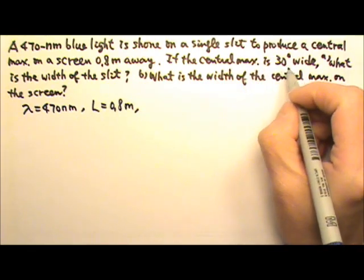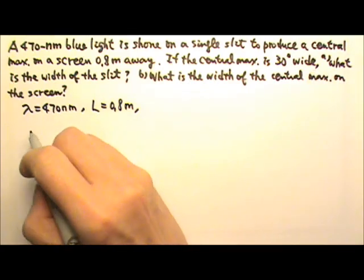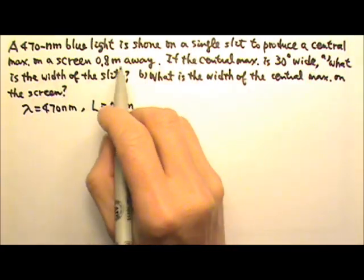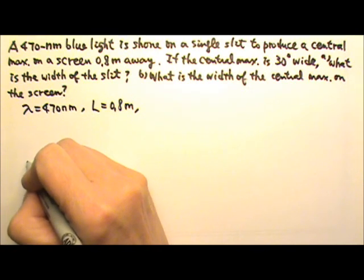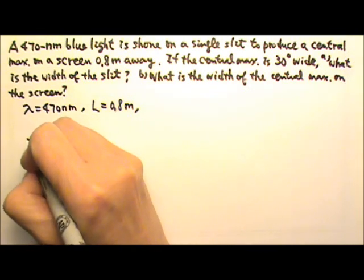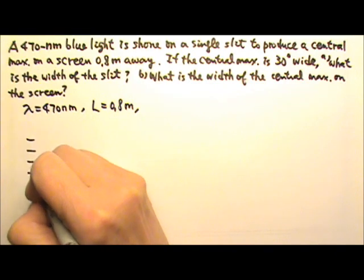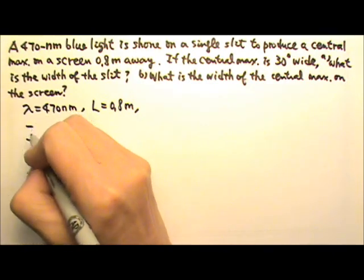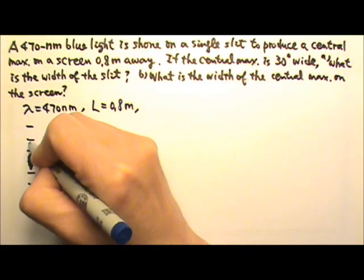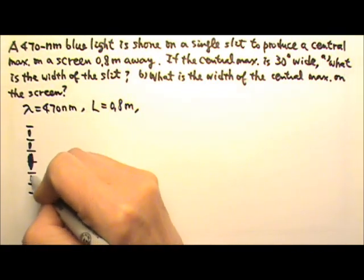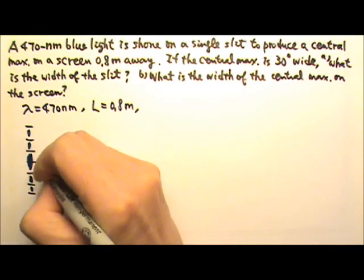If the central maximum is 30 degrees wide, this is a single slit. That means we have a central maximum that is twice as wide. So if I draw almost equal distances over here, the central maximum will be twice as wide, and then the next one will be like this, and then the next one. So that's the central maximum.